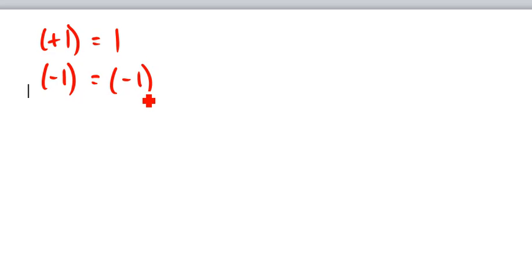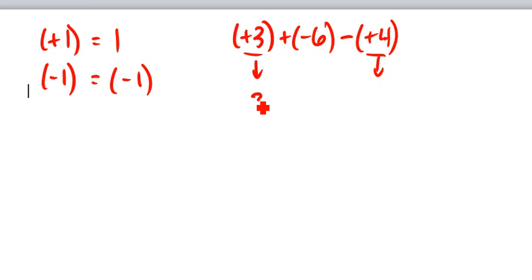You only really need brackets if you have two signs that are beside each other. So if we have positive 3 plus negative 6 minus positive 4, according to the first rule, anything that's positive, such as the positive 3 and the positive 4, they don't need a positive sign in front of it. So I can replace these with just 3 plus minus 6 minus 4, and this problem is a little bit easier to solve.